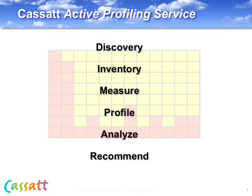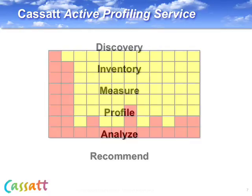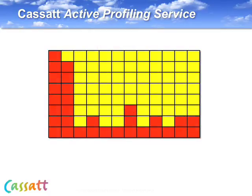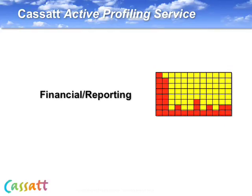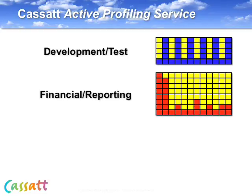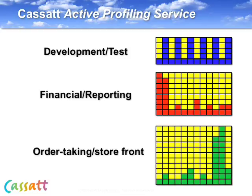This understanding is important. Different apps have different profiles that need to be understood to apply policy-based automation. A financial application, for instance, might be driven by business and regulatory cycle factors. A dev test environment might be highly time-driven by regular product test release cycles, while a customer-facing storefront app might peak during sales or around holiday seasons. Once we have these profiles, we can start to apply intelligent, policy-based management to improve efficiency.